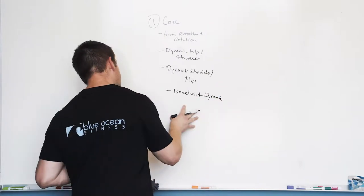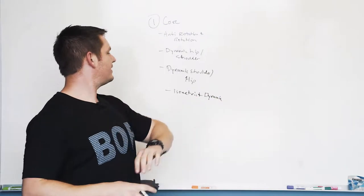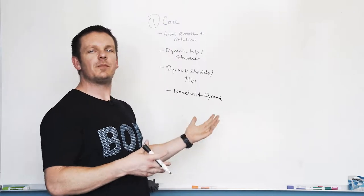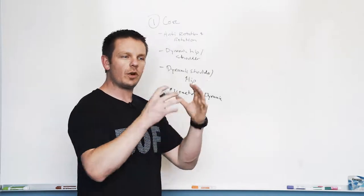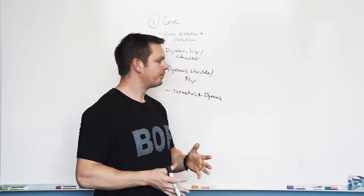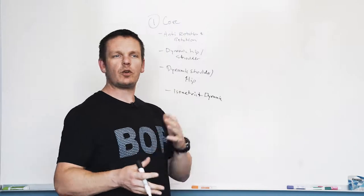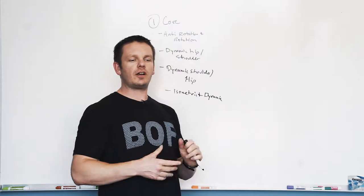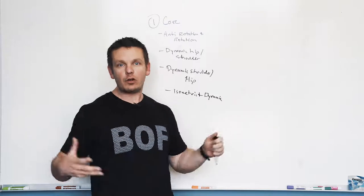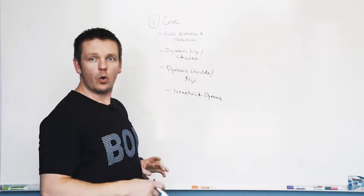The fourth category is isometric and dynamic. Isometric would be something like a plank where we're just bracing ourself or staying in place. The dynamic would be some sort of crawling exercise or complex core exercise where we've got movement coming from all over the place. So that is our core pillar.